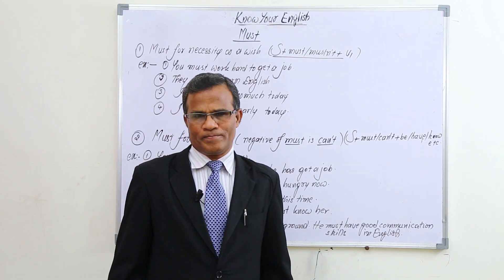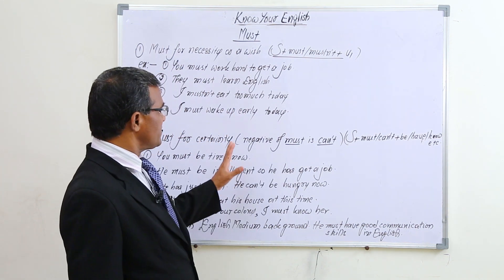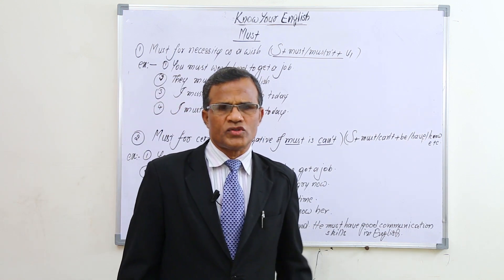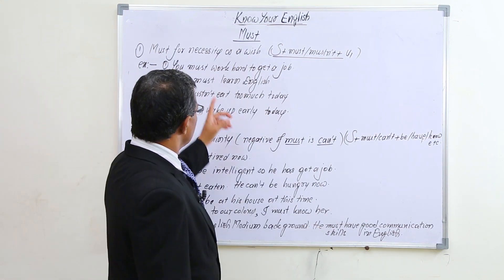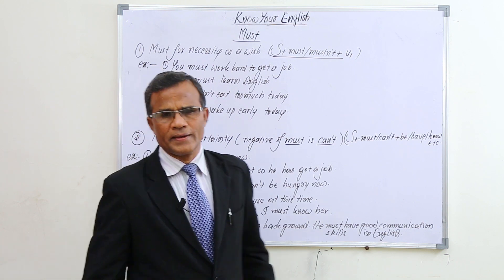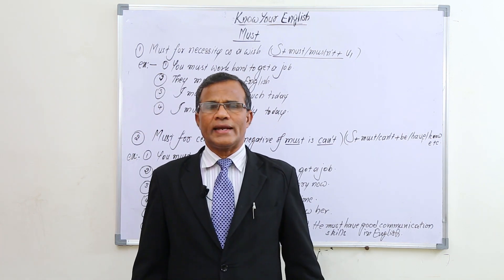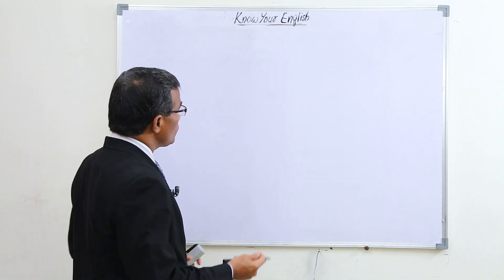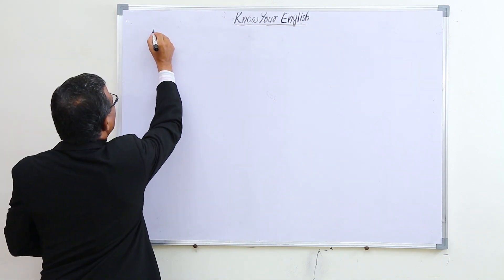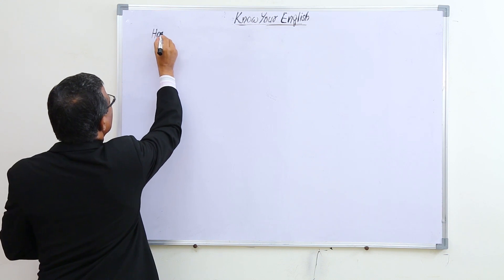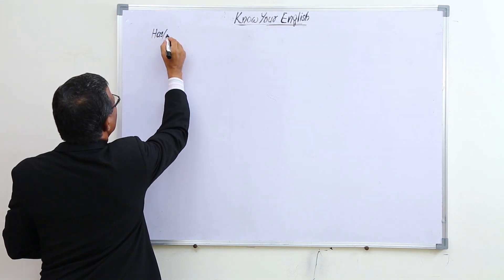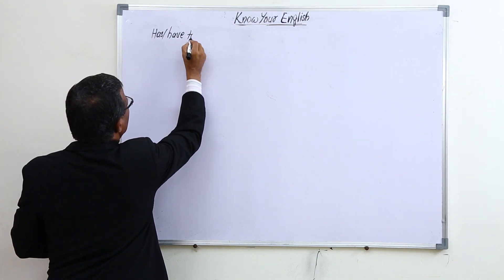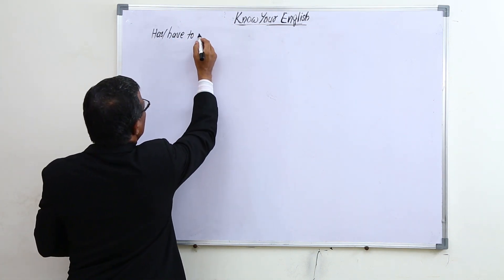As we feel certain about such qualities, we use 'must.' So in these two ways we use 'must' in day-to-day life. Now we are going to learn how to use 'has to' or 'have to.'